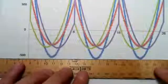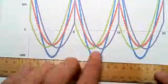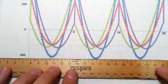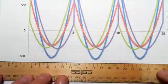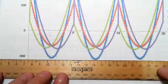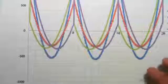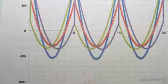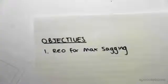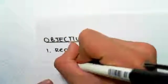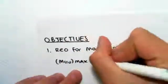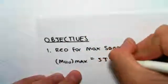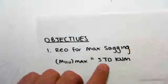The maximum sagging is in between the 8 and 18 span — you can see that's a little bit lower than the others. So we have minus 500, minus 600 would be there, so that's around minus 550. The maximum moment we get from the sagging is at mid span between the 8 and 18 span, and it's 550 kilonewton meters. So Muo max, the maximum design moment for sagging, is 550 kilonewton meters.